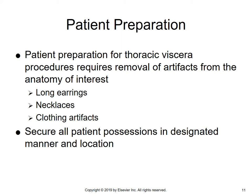Patient preparation for thoracic viscera procedures requires the removal of artifacts from the anatomy of interest — any long earrings, necklaces, or clothing artifacts. For a chest x-ray, tell the patient to remove everything from the waist up and put on a hospital gown. Make sure that includes the bra for women, any necklaces, and any dangling earrings. Some patients have piercings; make sure those are removed if they can be, and if not, it needs to be documented. Secure all patient possessions in a designated manner and location — keep them in the room in sight of the patient.